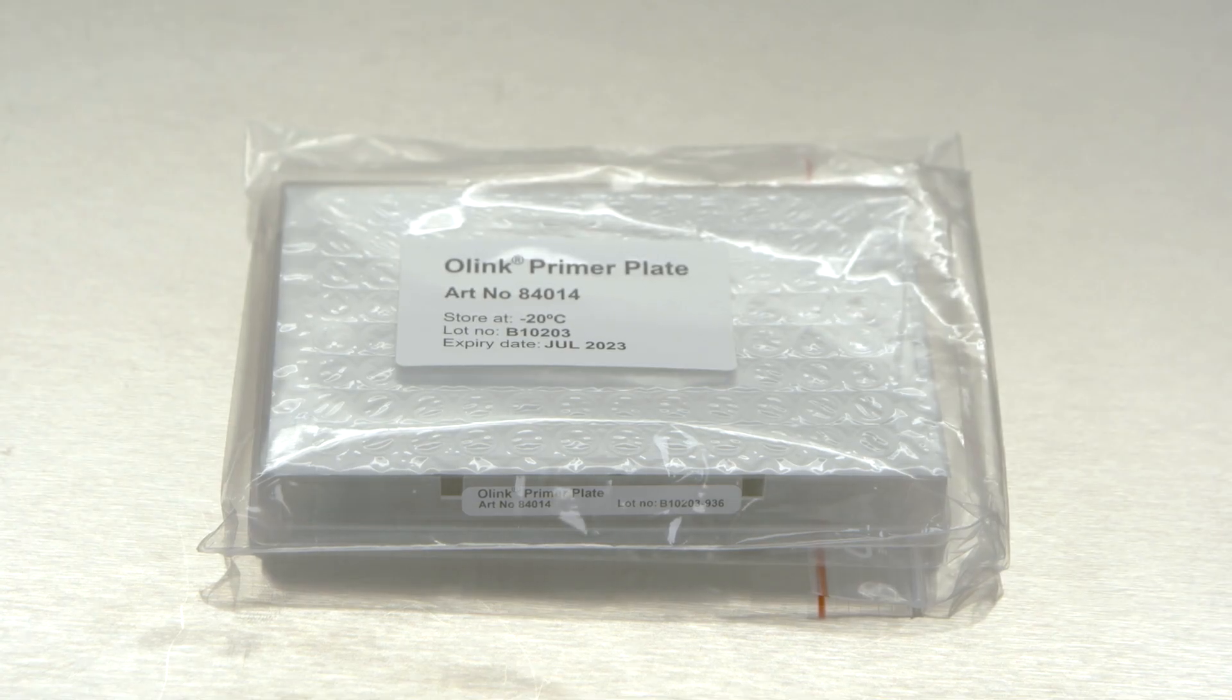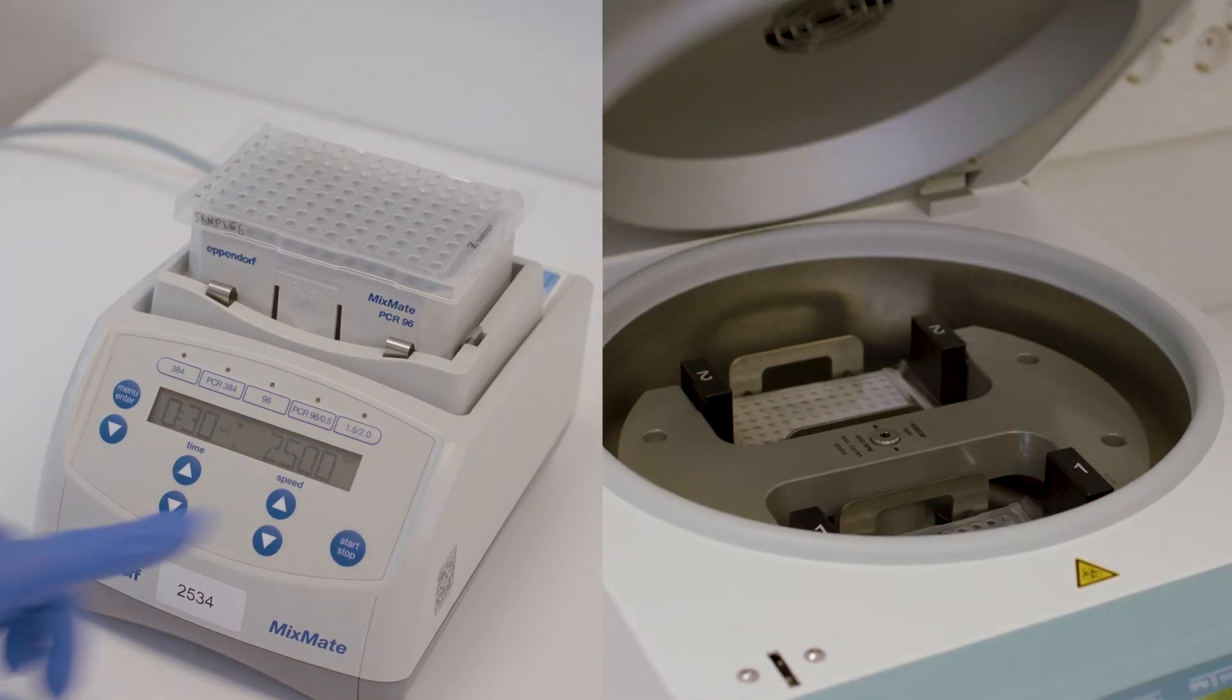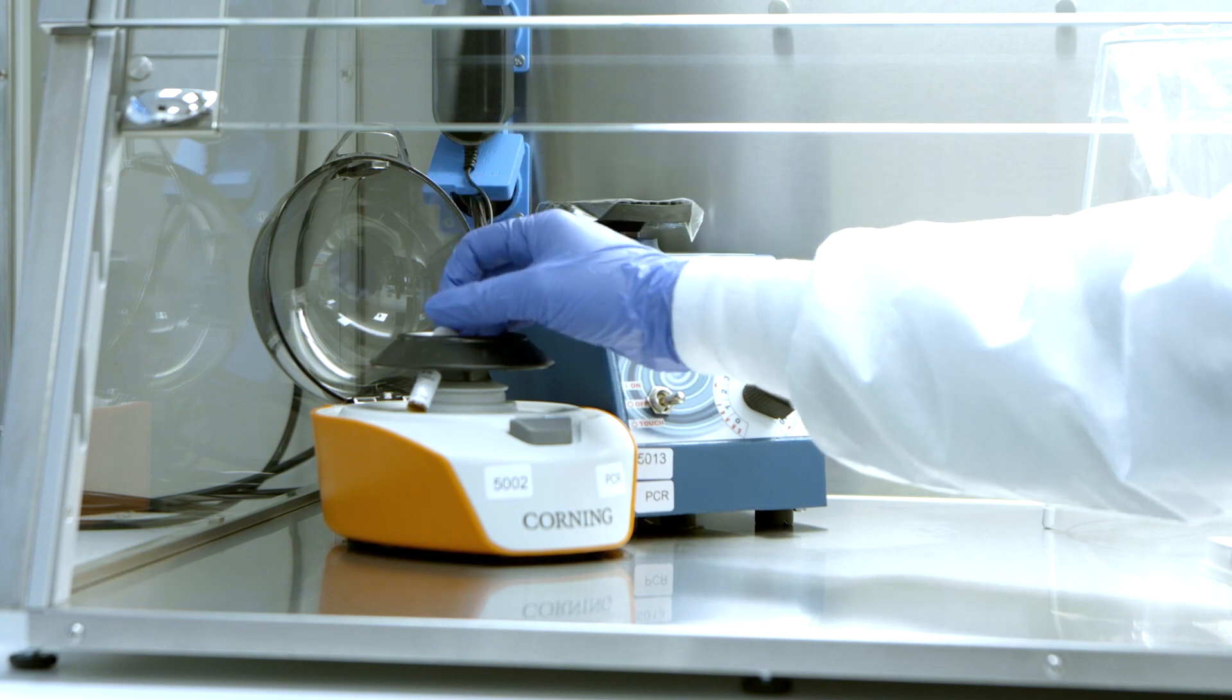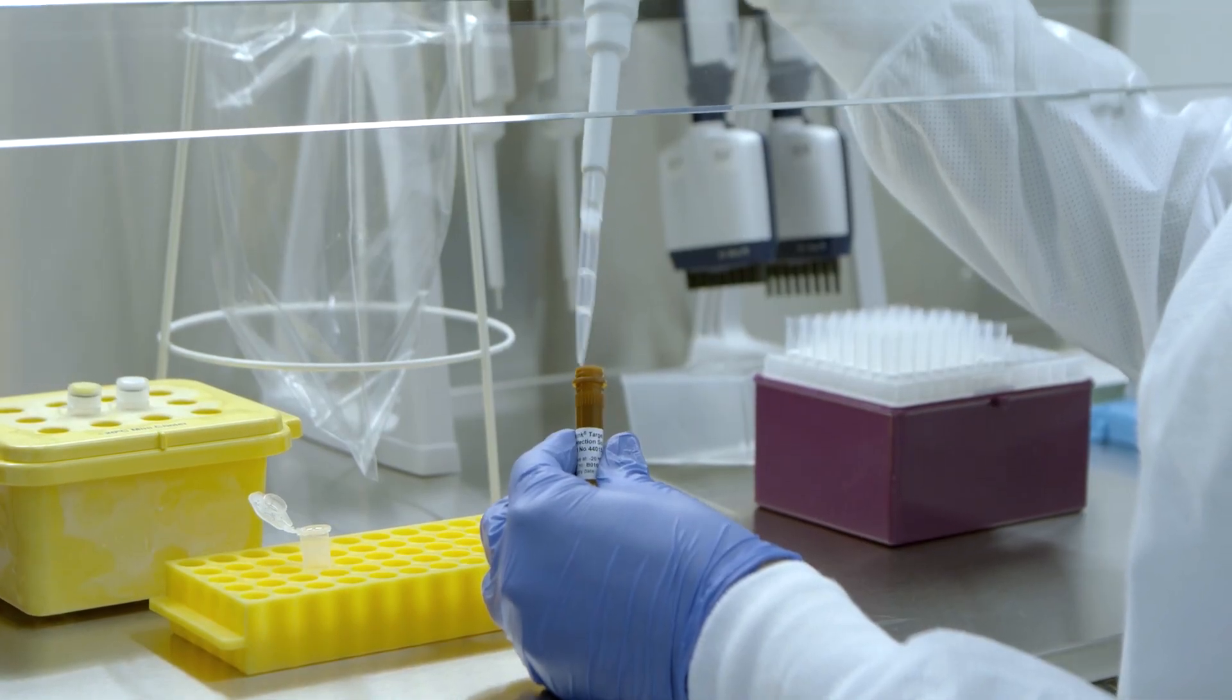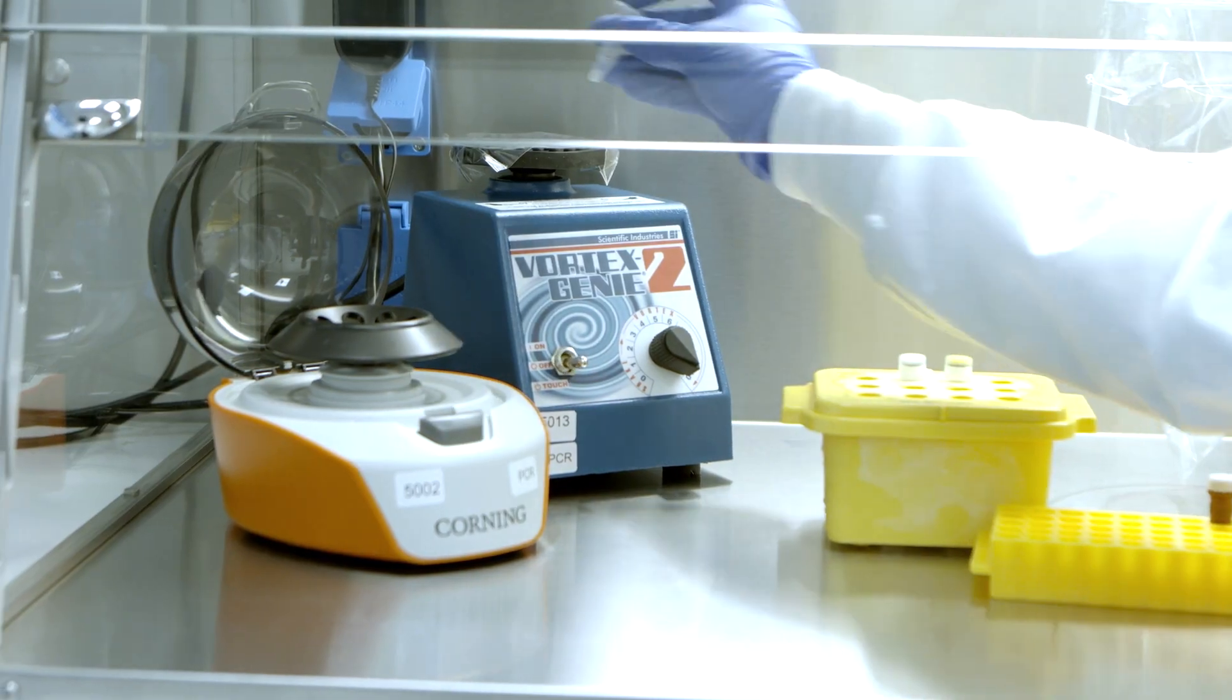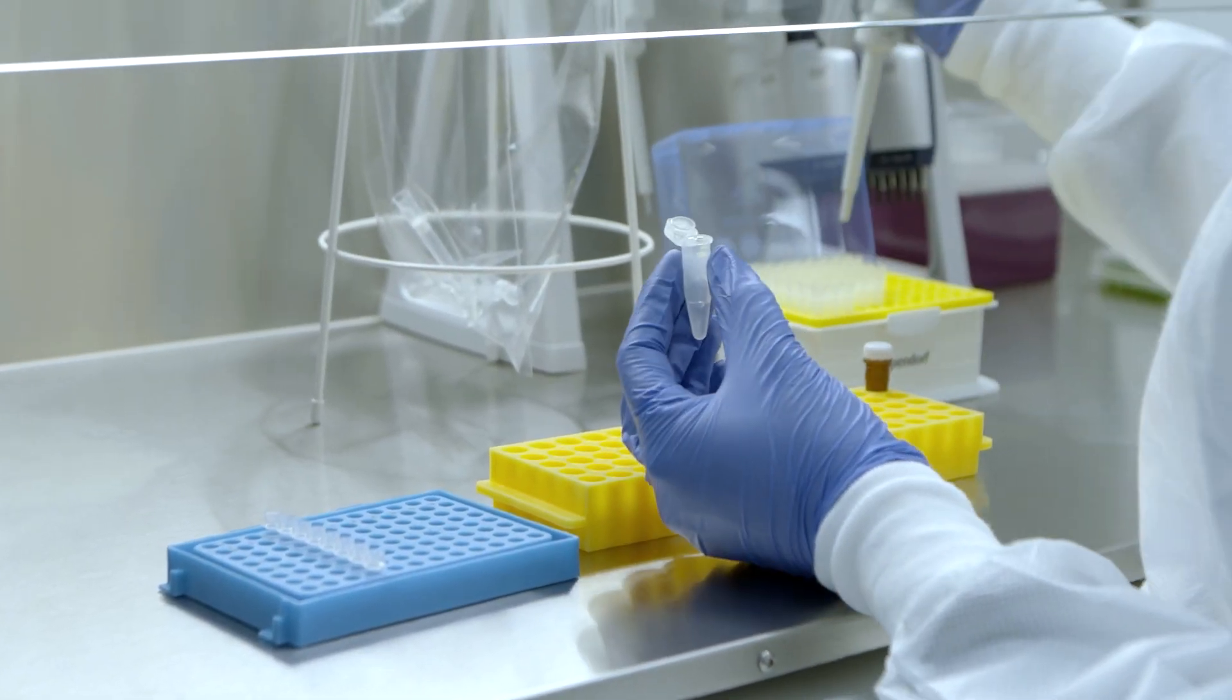Thaw the primer plate. Remove the incubation plate containing the PCR product from the PCR instrument. Vortex and spin down the content. Thaw the detection solution and vortex and spin down the detection solution and primer plate. Bring out the detection enzyme and PCR polymerase, and remember to place them on a freezing block. And prepare the detection mix in a microcentrifuge tube according to O-Link user manual. Vortex and spin down the detection mix before transferring 95 microliters of the mix to the bottom of each well of an 8-well strip using reverse pipetting.